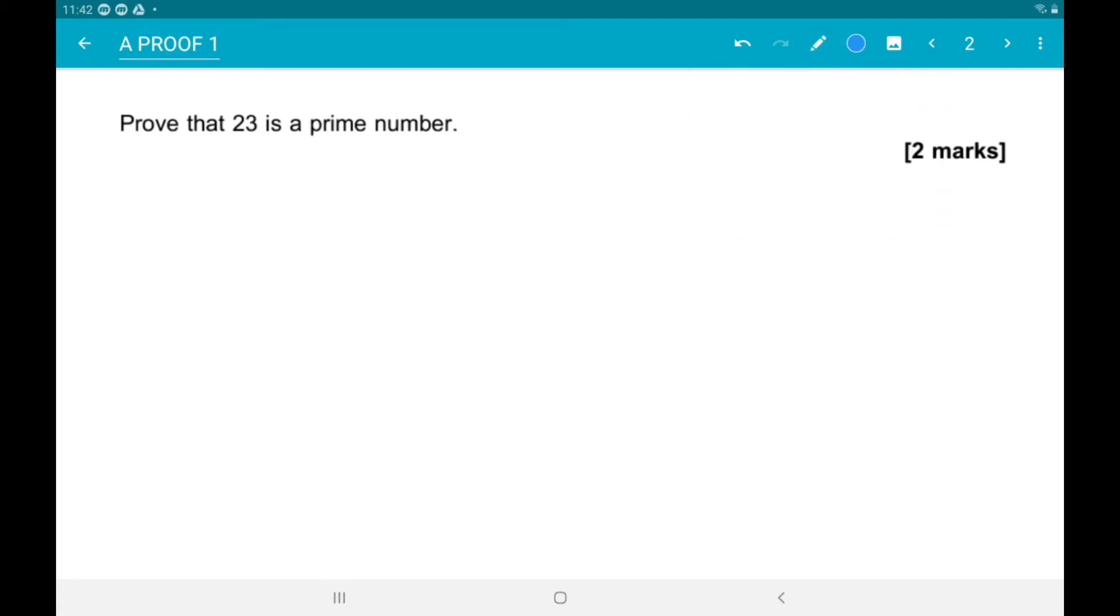So, we know 23 is between 16 and 25. So, the square root of 23 is between 4 and 5.